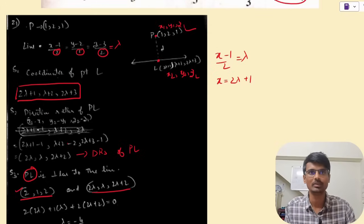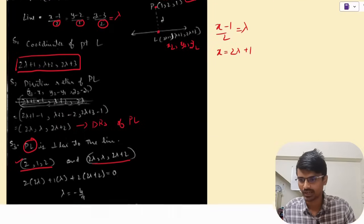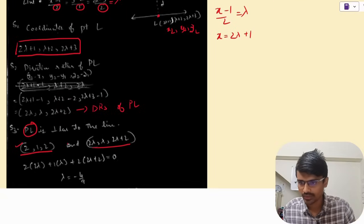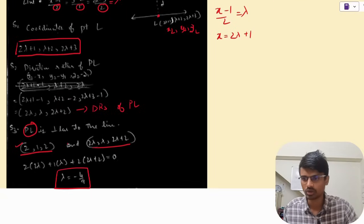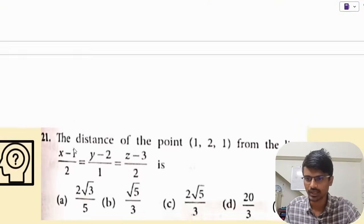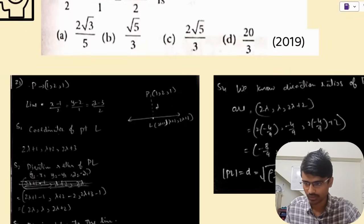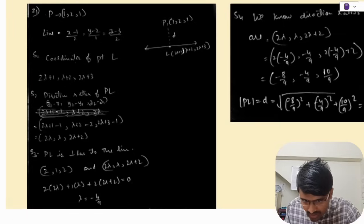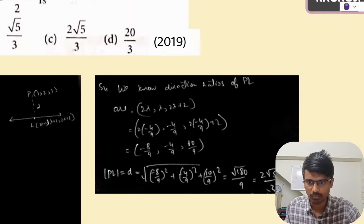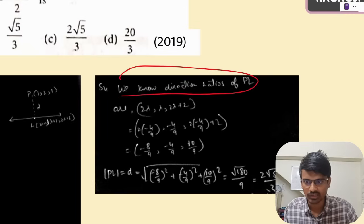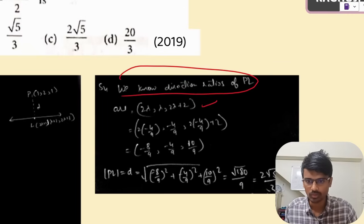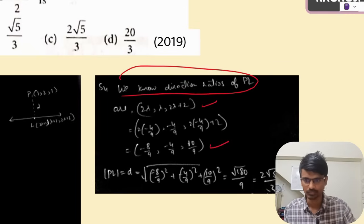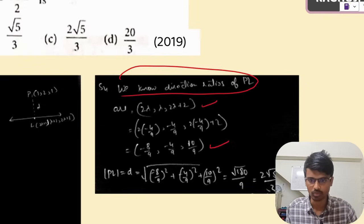Since PL is perpendicular to the line, the dot product equals zero. Doing the same thing, we will get the value of λ equal to −4/9. Once we have found the value of λ, we substitute it to get the direction ratios of PL: (−8/9, −4/9, 10/9).